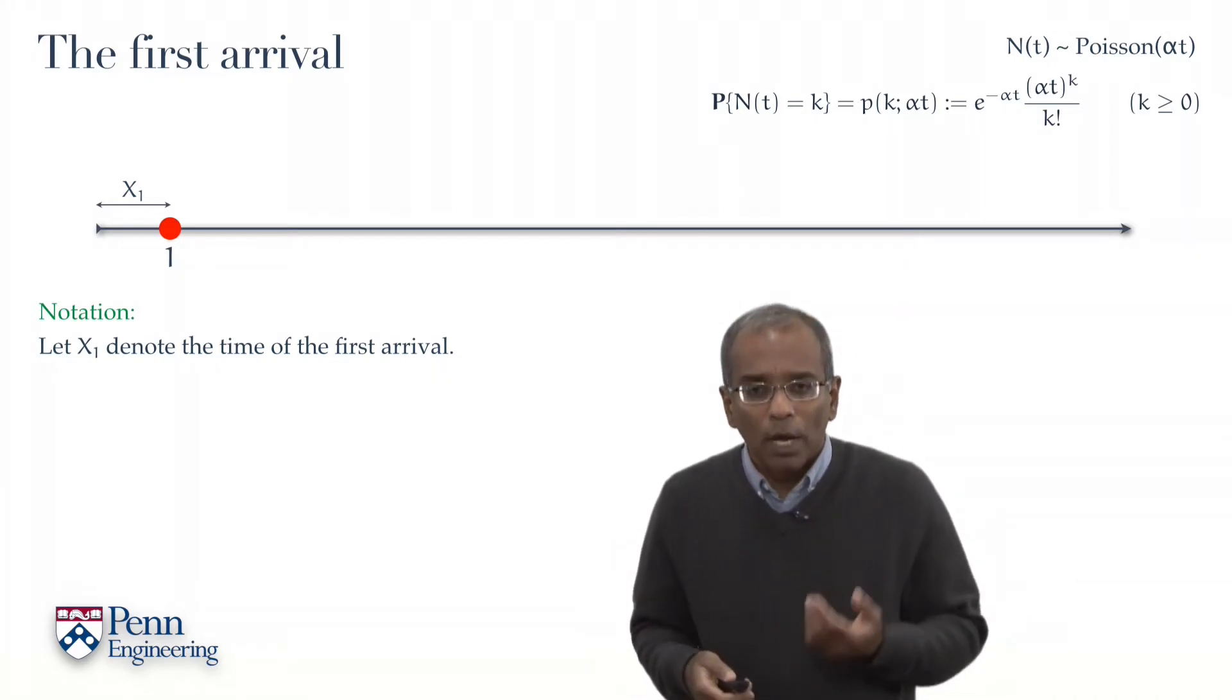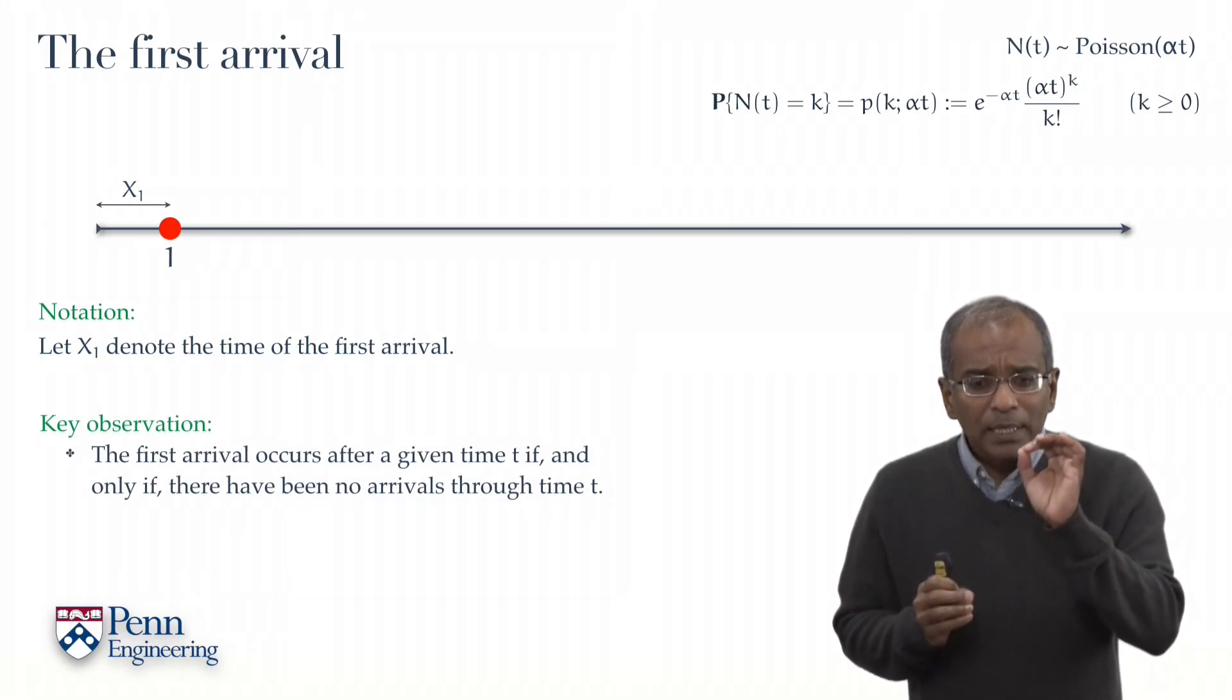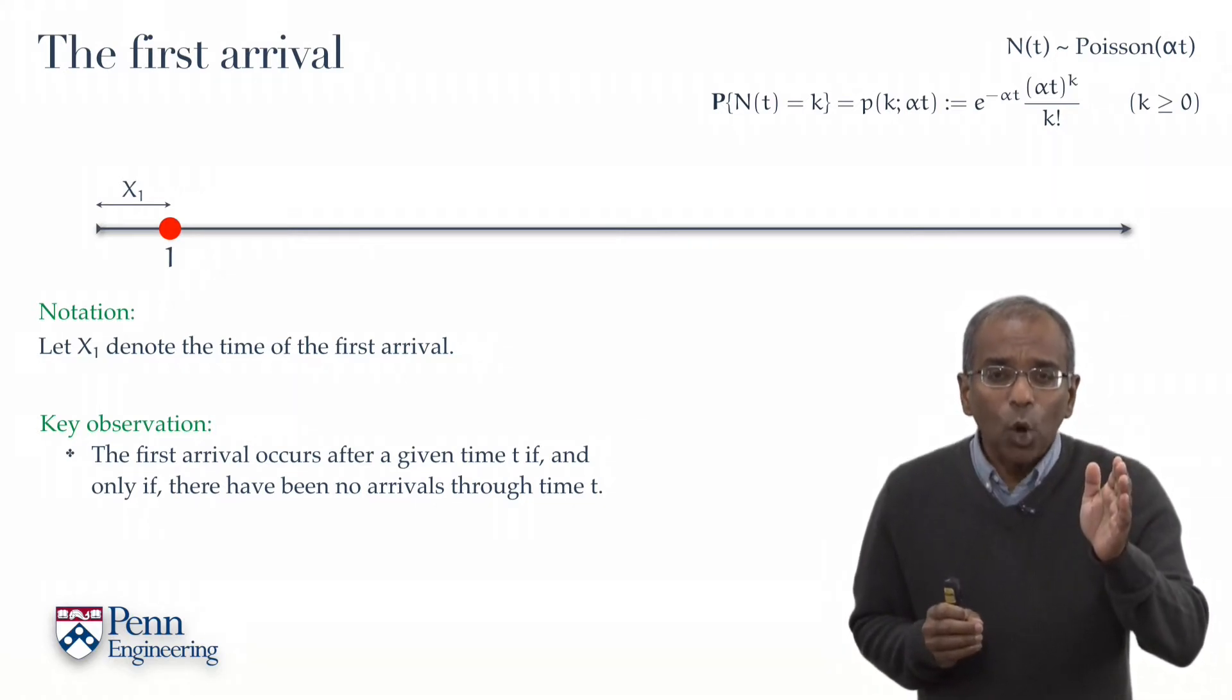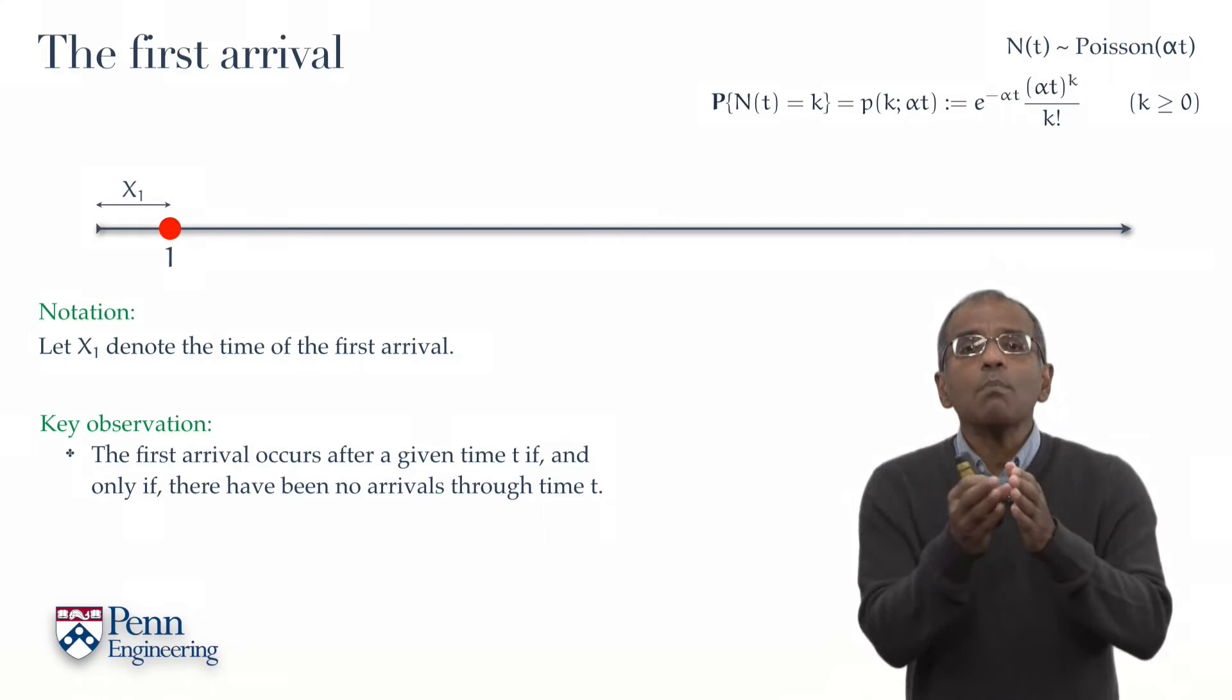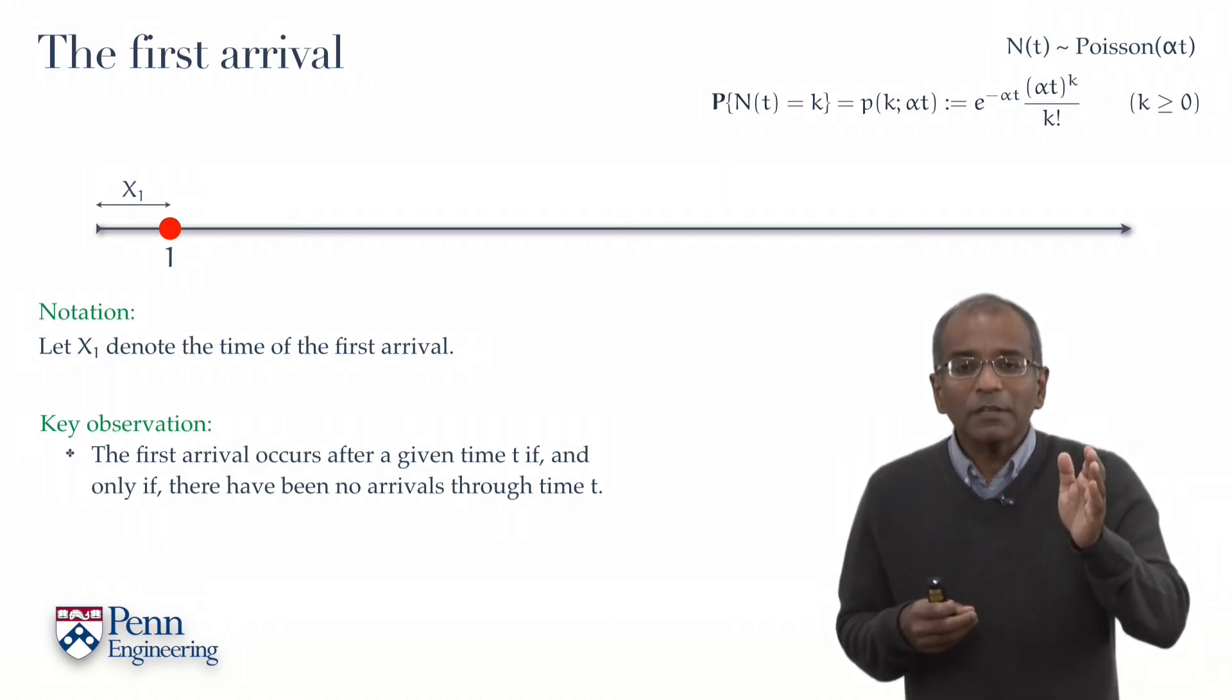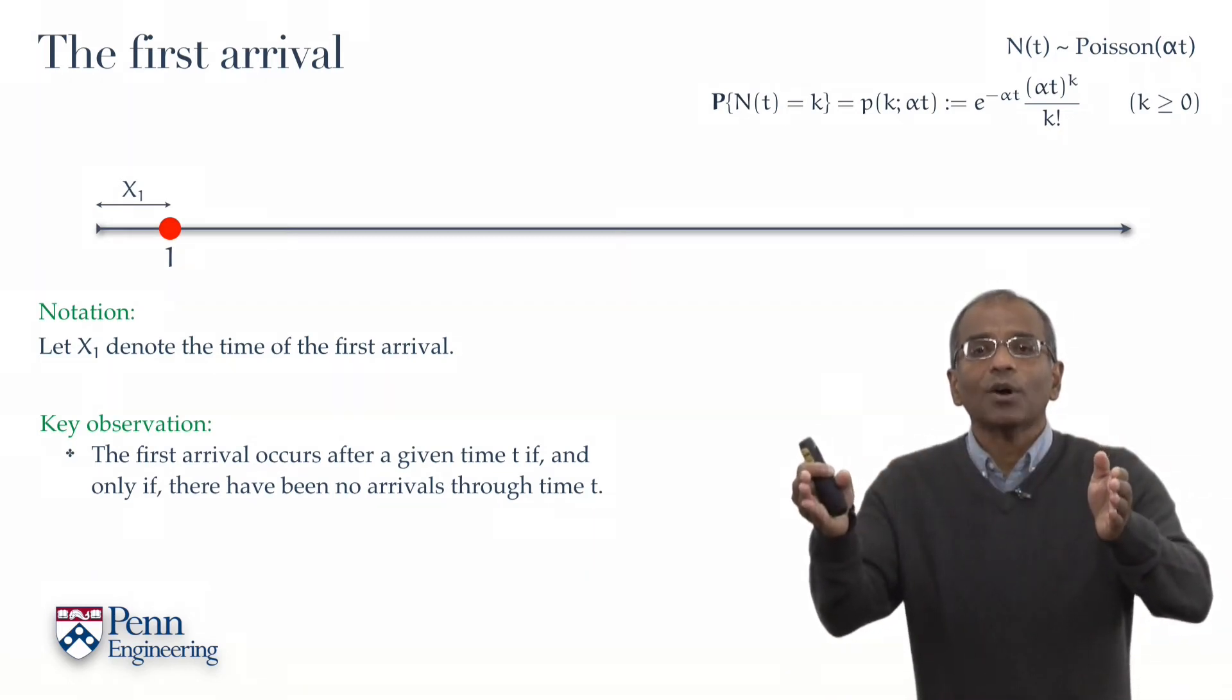At this point, a key observation makes matters completely transparent. And to wit, that if you pick an arbitrary point in time, say t, the event that the first arrival occurs after that t is equivalent to saying that the number of arrivals up till t is exactly 0. Let me repeat that again: the event that the first arrival occurs after t occurs if and only if the event that there are no arrivals up till t occurs.